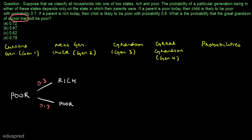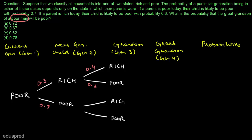Let's move to generation number 3. In generation number 3, the child could be rich or poor depending on the state of the parent. If the parent is rich, the child could be rich or poor, and we are given that if a parent is rich today their child is likely to be poor with probability 0.6, so this probability is 0.6 and consequently this probability is 0.4. Similarly, if the parent is poor in generation 2, the child in generation 3 could be rich or poor with probabilities 0.7 and 0.3.